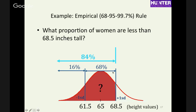Looking at this, recall the rule for mutually exclusive events. We're splitting all possible heights into three mutually exclusive regions: height below minus one standard deviation (A), height between minus one and plus one standard deviation (B), and height greater than plus one standard deviation above the mean (C). Because they're mutually exclusive and exhaustive, P(A) + P(B) + P(C) = 1.